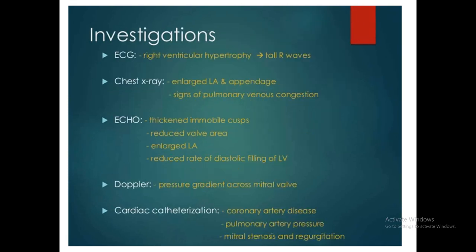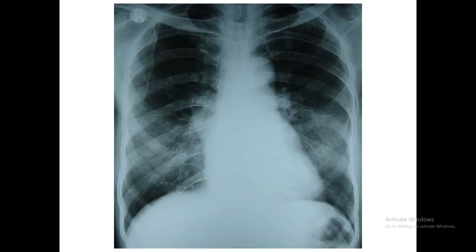Investigations include ECG, chest X-ray, echo, Doppler, and cardiac catheterization. On the X-ray, there is cardiomegaly and on the left border there is bulging of the left atrium — this is the first sign seen in mitral stenosis. There are nine other signs on X-ray in mitral stenosis. There is straightening of the left border of the heart, bulging of the right pulmonary conus, and double right heart border.